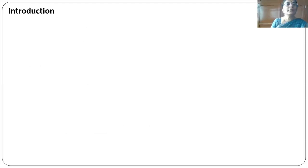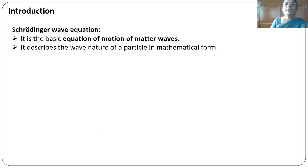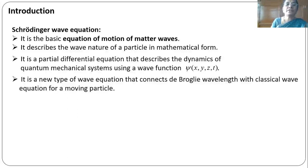Let me introduce the topic. The Schrödinger wave equation is the basic equation of motion of matter waves. It describes the wave nature of a moving particle in mathematical form and is a partial differential equation that describes the dynamics of a quantum mechanical system using a wave function psi of x, y, z and time t. It is a new type of wave equation that connects the de Broglie wavelength with the classical wave equation for a moving particle.